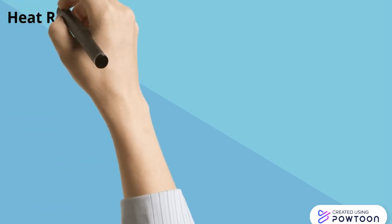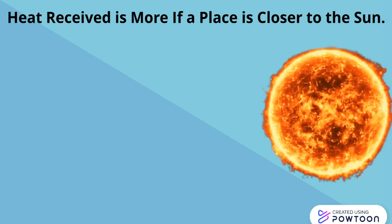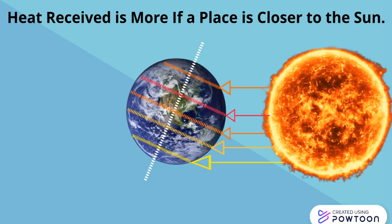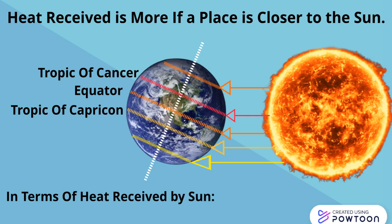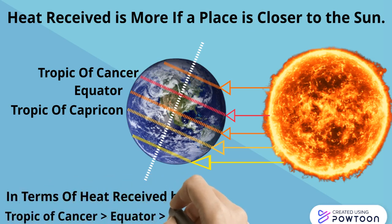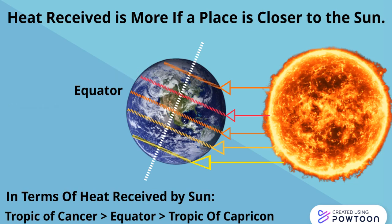The second fact is the heat received by a place is more if it is closer to the sun. As you can see in the figure, the Tropic of Cancer is closer to the sun than the equator, and the equator is closer than the Tropic of Capricorn. So in terms of heat received, the Tropic of Cancer would receive more heat, the equator would receive a little less, and the Tropic of Capricorn the very least.